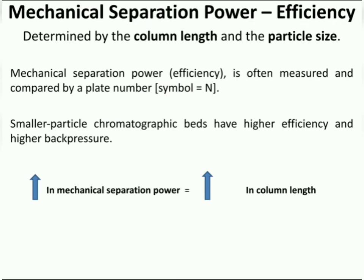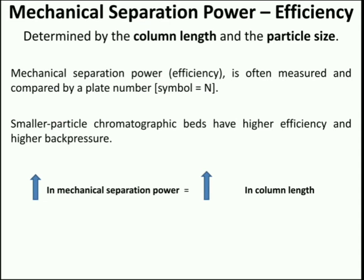Next is the mechanical separating power or efficiency of the column. A column's mechanical separating power is determined by the column length and the particle size. Efficiency is often measured and compared by a plate number, represented by the symbol N. Smaller particle chromatographic beds have higher efficiency and higher back pressure. An increase in column length as well as smaller particle size results in increased mechanical separating power, but this also has negative effects like longer chromatographic run times, greater solvent consumption, and higher back pressure.